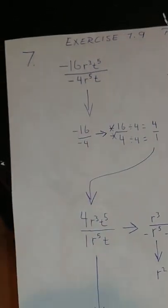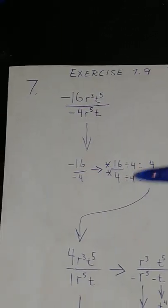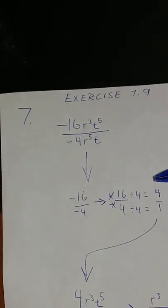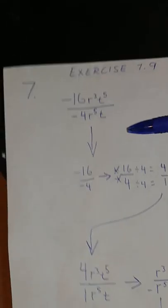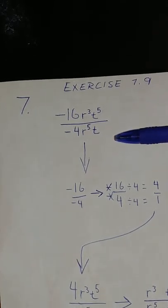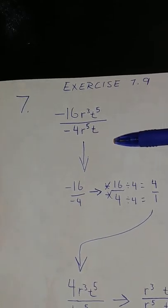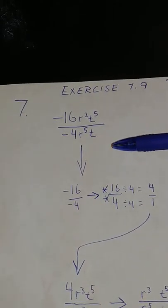In Exercise 1.9, page 34, I chose number 7, which is negative 16r to the power of 3t to the power of 5 over negative 4r to the power of 5t.